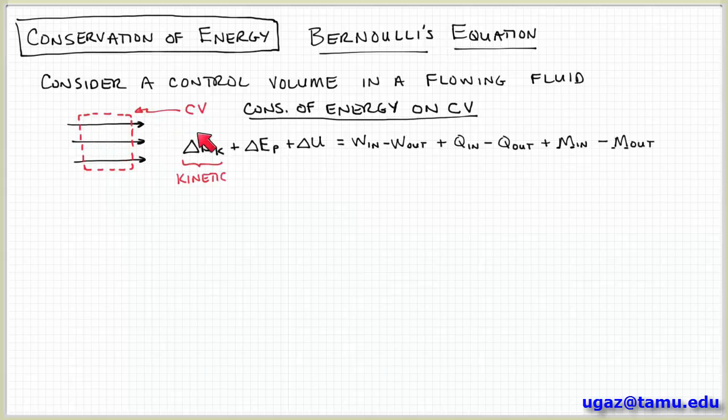So we can write an energy balance on this control volume. And it would include these terms. So on the left-hand side, these are the net rate of change of energy in the control volume. So the first term includes kinetic energy. The second term, delta-EP, represents potential energy. And the third term, delta-U, represents internal energy.